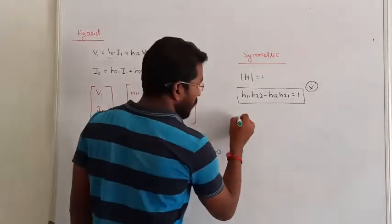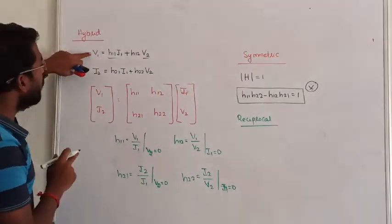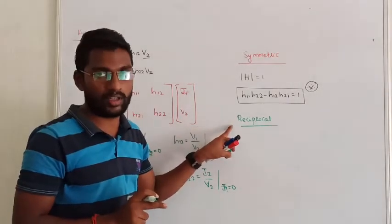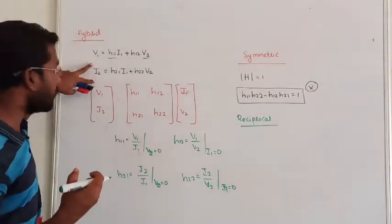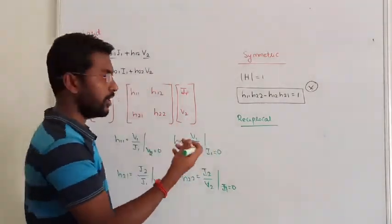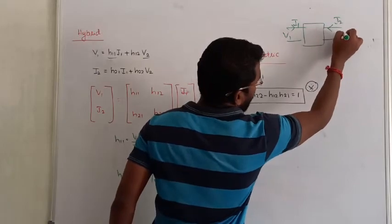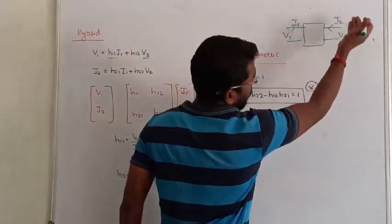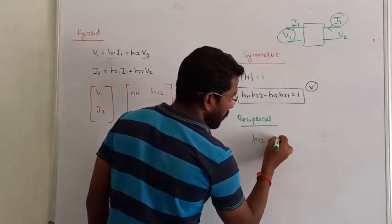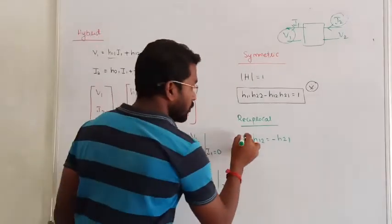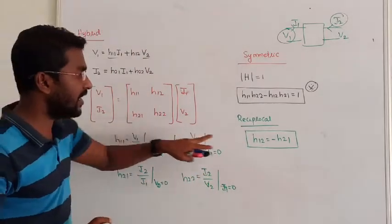Next, we check reciprocity — whether the given network is reciprocal or not. In hybrid parameters, we apply a voltage source at the input with current I1 and observe the output. When reversing the direction of the current, the reciprocity condition becomes H12 = −H21. If this condition is satisfied, the network is reciprocal.